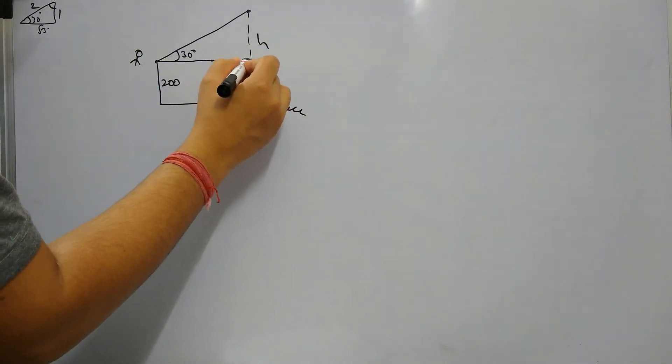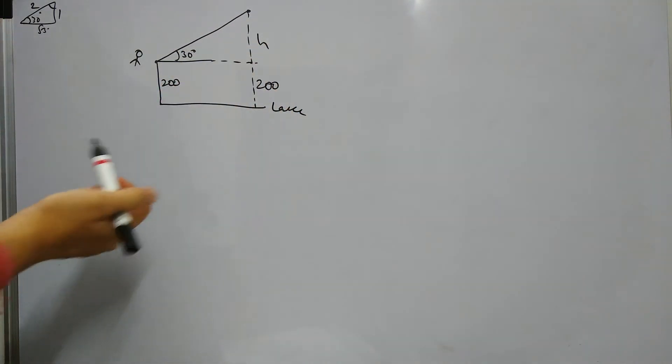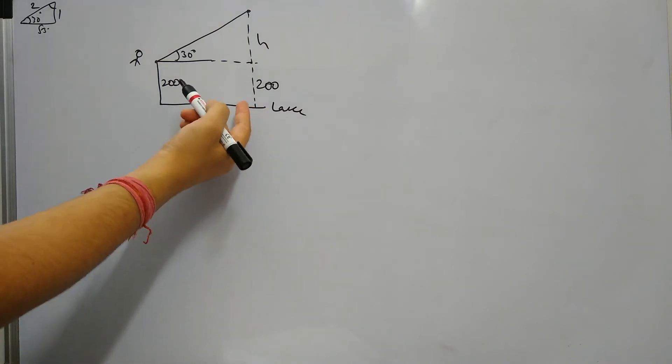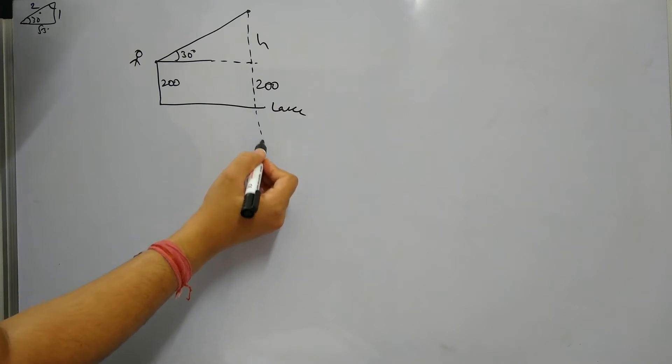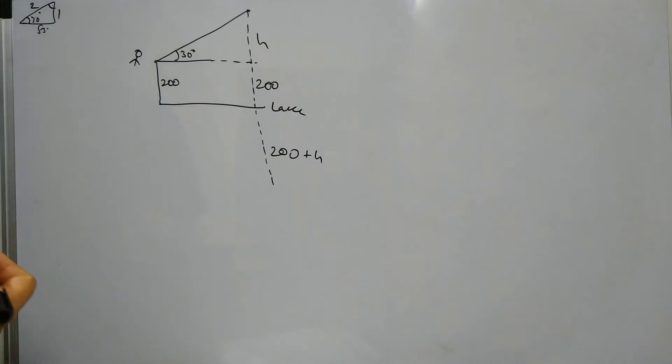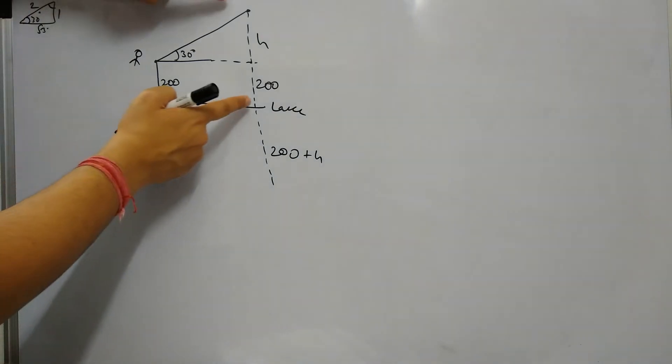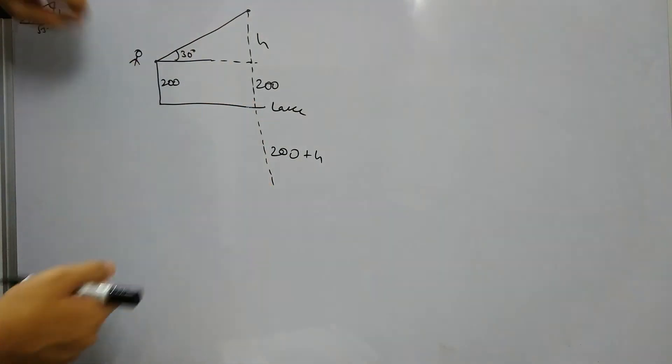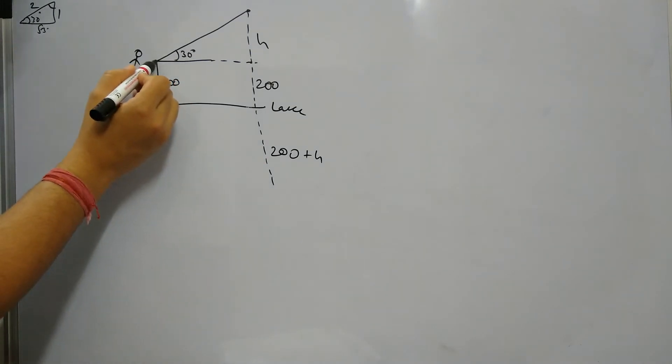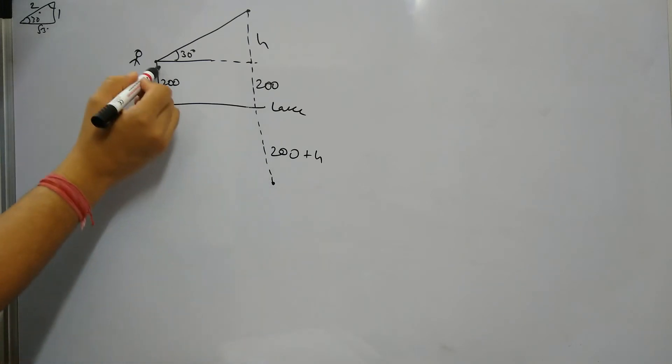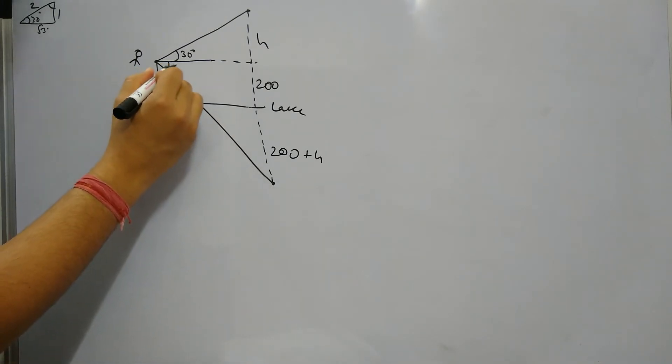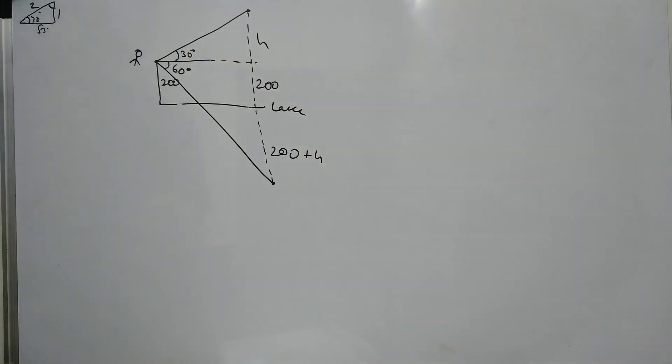So from the lake surface, if something is at the height of h plus 200, then the shadow will also be that much deeper in the lake. And now this is given: the angle of depression of the shadow is 60 degrees. We need to find out the height of the cloud, which is h.